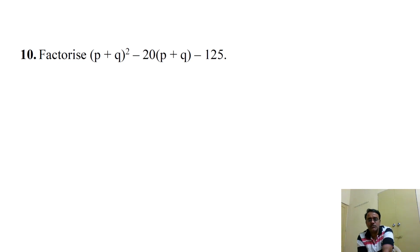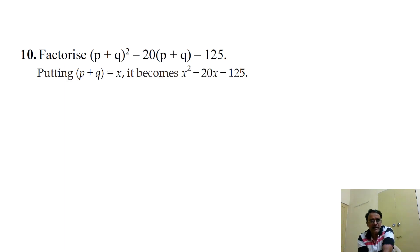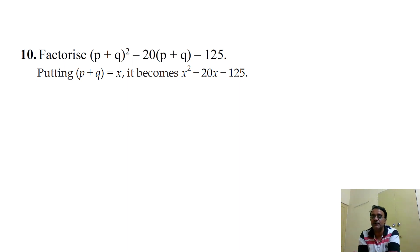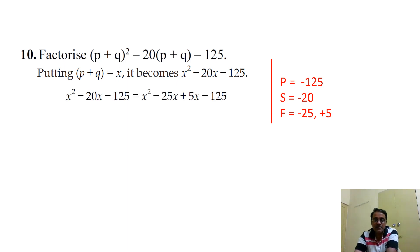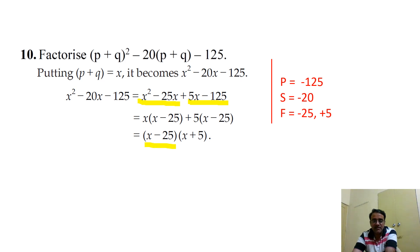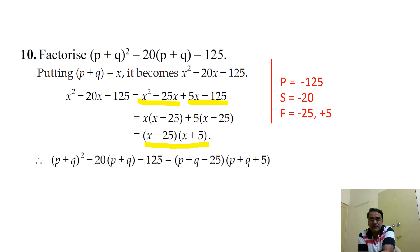Question 10: factorize (p + q)² - 20(p + q) - 125. Let x = (p + q), giving x² - 20x - 125. Product is -125 and sum is -20; the factors of 125 with difference 20 are 25 and 5. So we split as -25 and +5, take common factors, and get (x - 25)(x + 5). Replacing x back, the final answer is (p + q - 25)(p + q + 5).